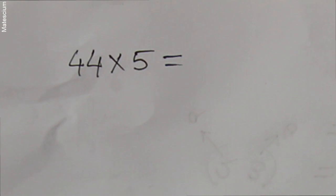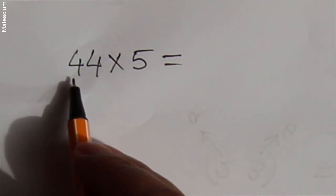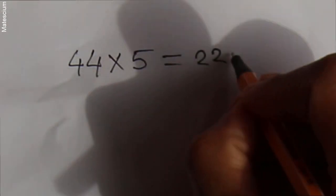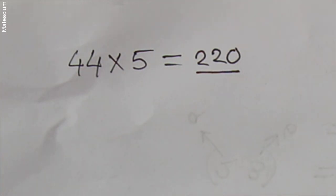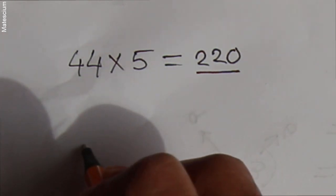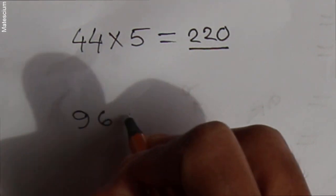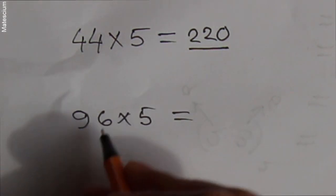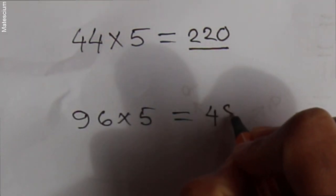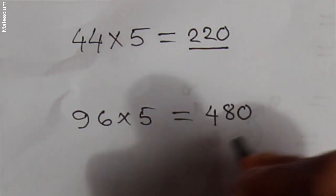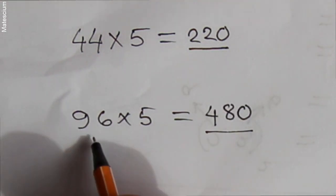44 is multiplied by 5. Now consider half of 44 — half of 44 is 22 — and write an additional 0 here. Yes, 220 is the answer of 44 times 5. That's very easy, right? Let's practice one more: 96 times 5. You have to consider half of 96 — half of 96 is 48 — and write an additional 0 here. Yes, 480 is the answer of 96 times 5.